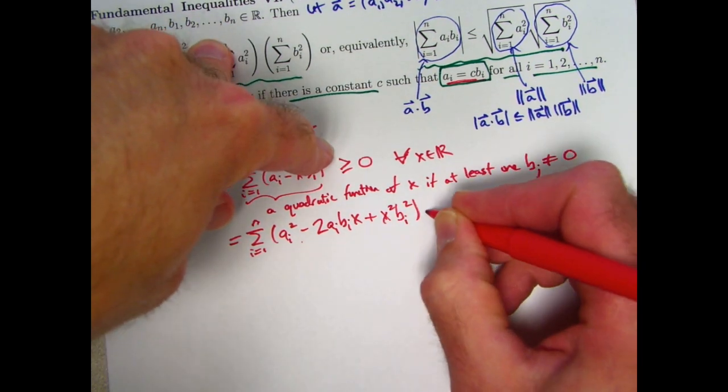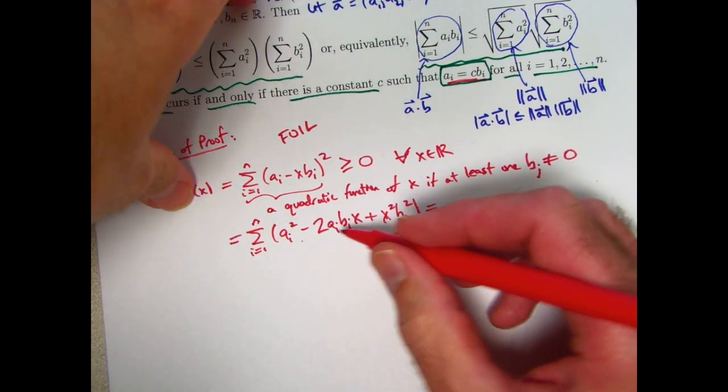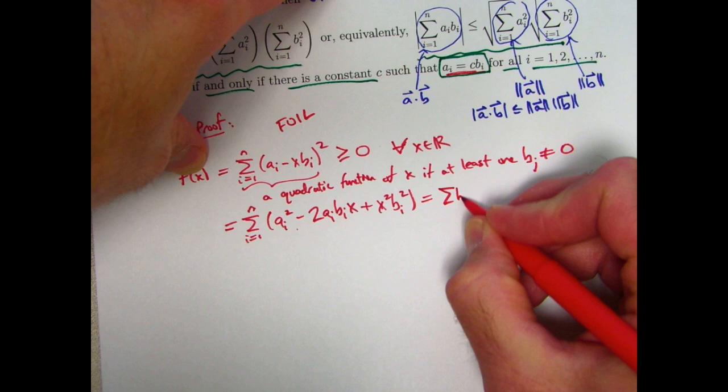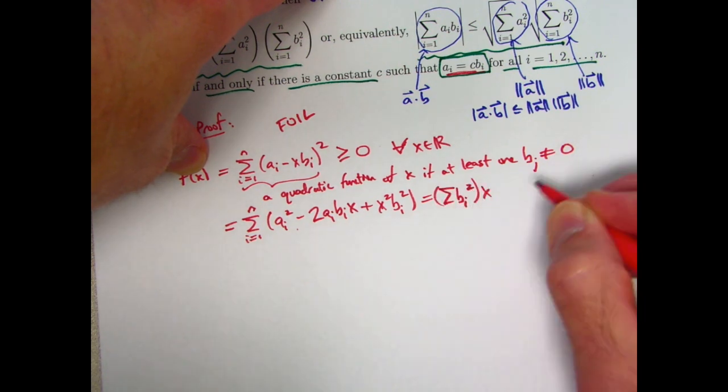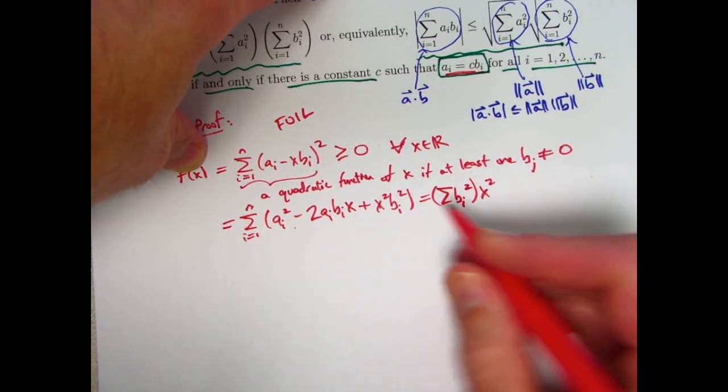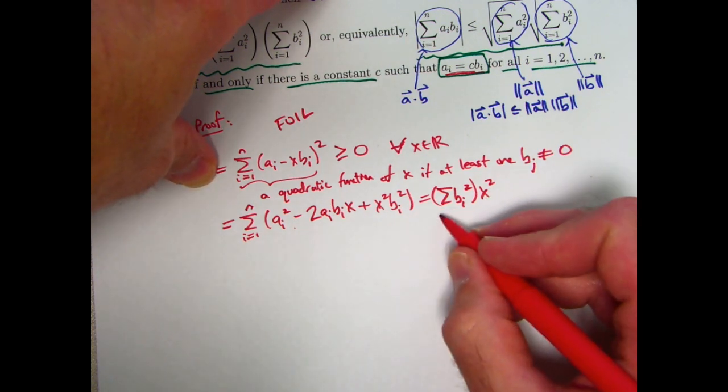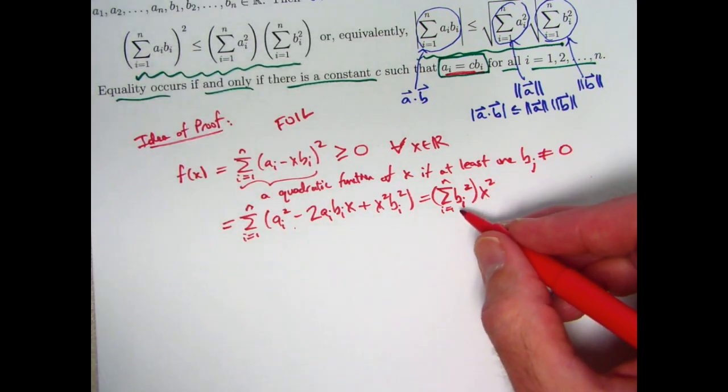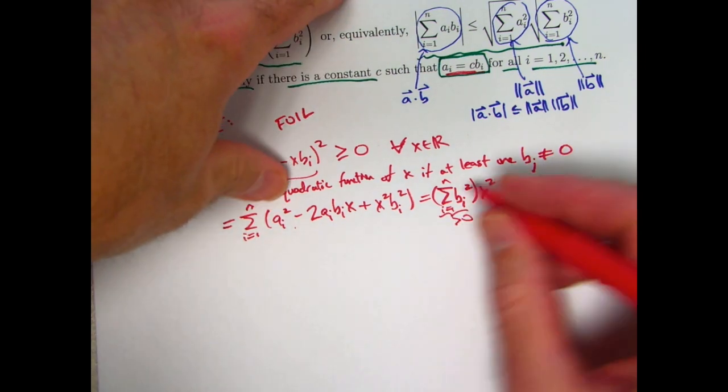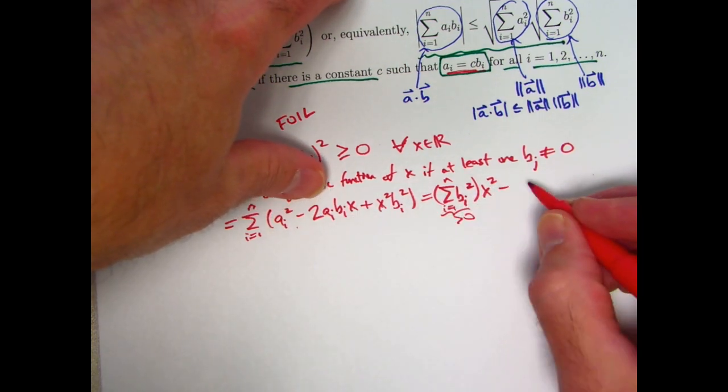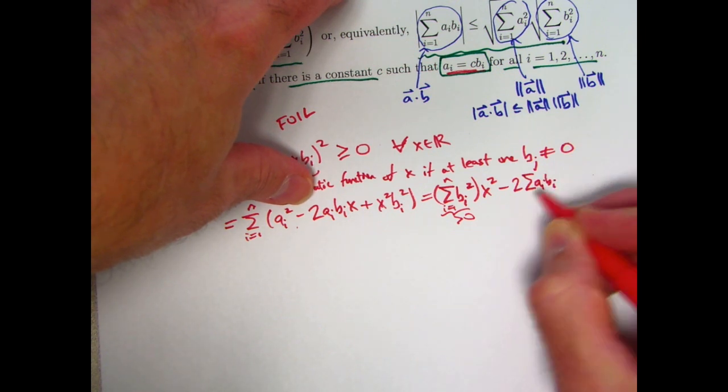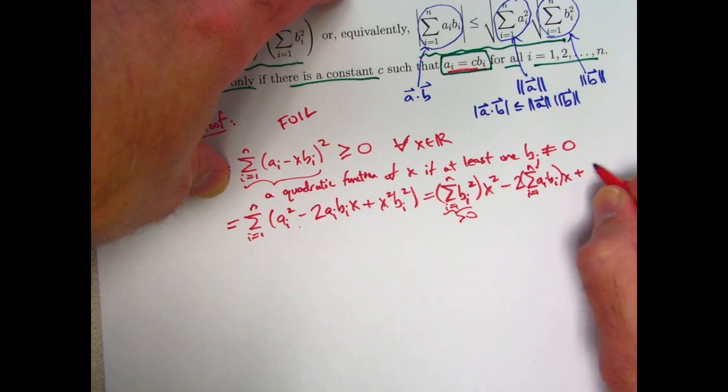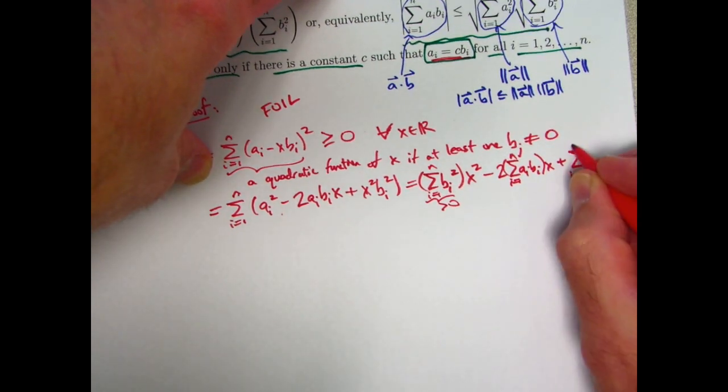And then by properties of summation we can essentially distribute the summation sign through the parentheses—it's not really a distributive property but that's the form of it—and we can write this as the sum of the bᵢ² times x, essentially factoring out the—excuse me—times x², essentially factoring out the x² from the sum of these things. x² is constant with respect to i. That's the coefficient of x², which, since at least one bᵢ is not zero, this thing is bigger than zero. It's a positive quantity here. Then we have the summation of this thing, which I can write as minus 2 times the summation of aᵢ times bᵢ times x. I can factor the x out.